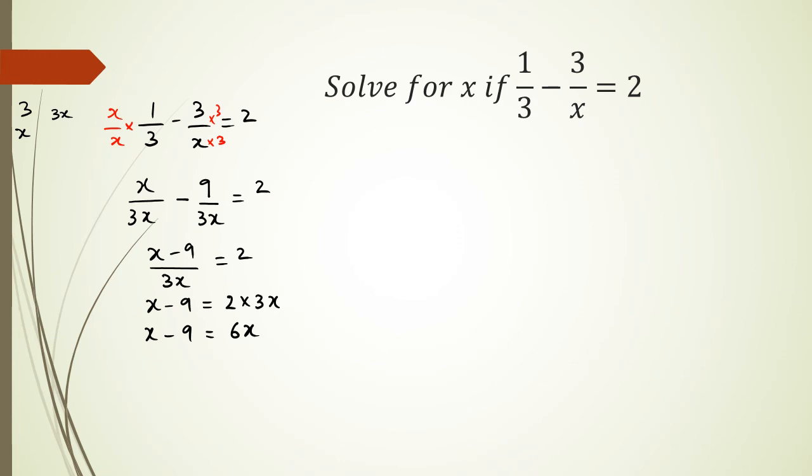So collecting all my like terms, I will have minus 9 equals 6x minus x. I mean, remember, I could do it either way. So negative 9 equals 5x, and then x is equal to negative 9 over 5. That is what my solution for x is.